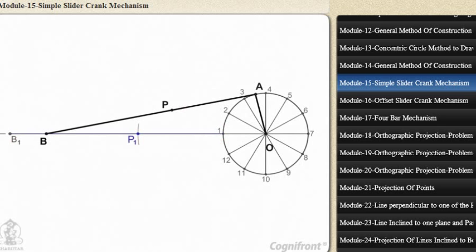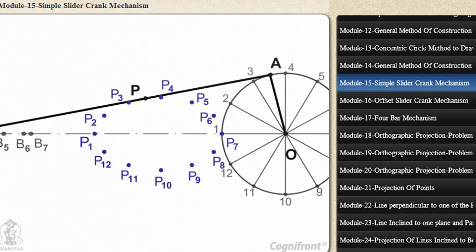Obtain the other points in a similar manner. Then, draw a smooth curve through these points. This curve is the locus of point P.